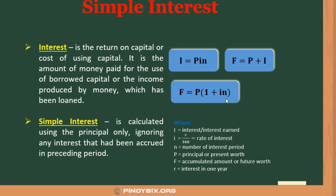If you want to get the present worth given the future worth, it is simply F divided by the quantity 1 plus i times n. Equivalently, this can be written as F times the quantity 1 plus i times n, raised to negative 1. It's just the same.